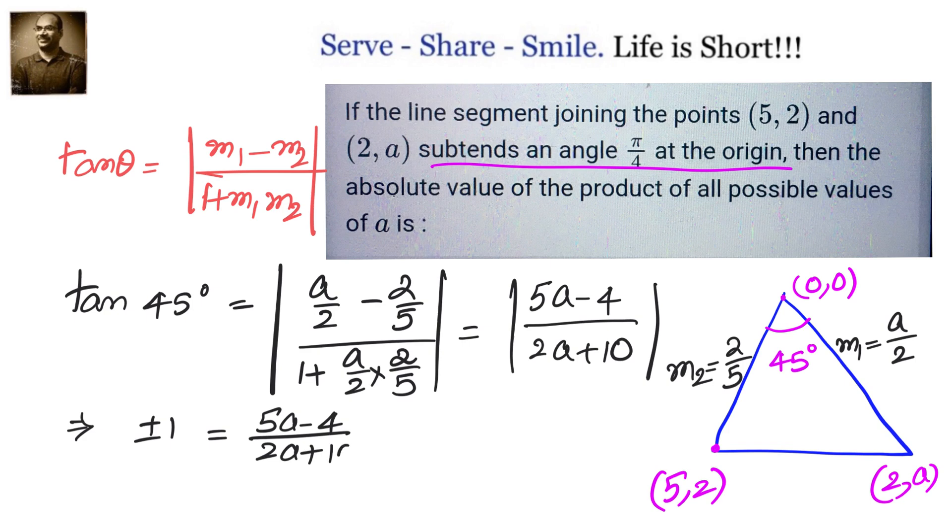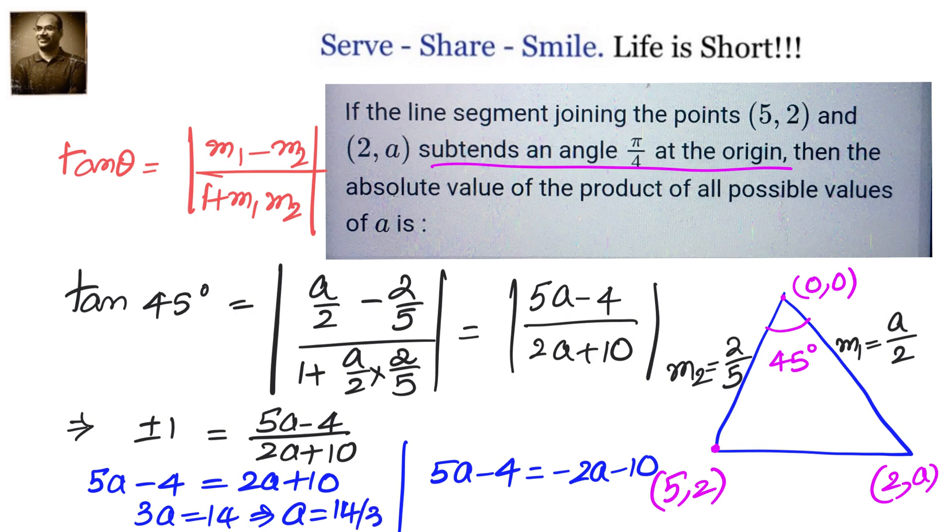When you take plus, we have 5a minus 4 equals 2a plus 10. When we take negative, we will have 5a minus 4 equals minus 2a minus 10. Two conditions from which we can easily find out the values of a. From the first one we get 3a equals 14, or a equals 14/3. And from the second one we will get 7a equals minus 6, or a equals minus 6/7.